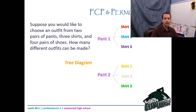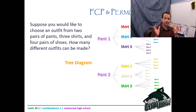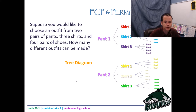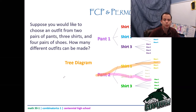But I haven't taken into account my shoes. I have four pairs of shoes, so at the end of each branch I can now branch off into shoe one, shoe two, shoe three, or shoe four — and I could do that for every shirt. This outlines every outfit possible. I could choose pant two, shirt two, with shoe four — there's one outfit. I could choose pant two, shirt one, with shoe two — there's another outfit. If I counted all that up, that would tell me my total outfits.